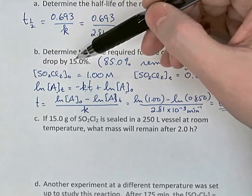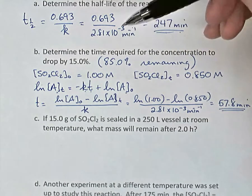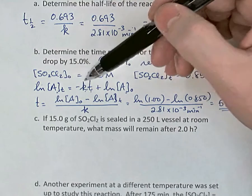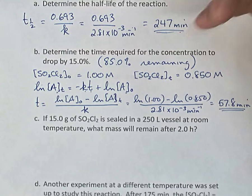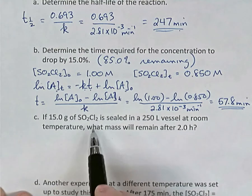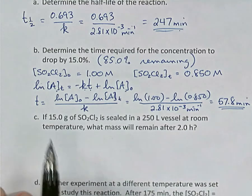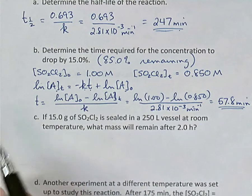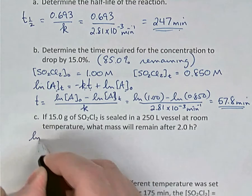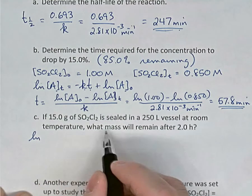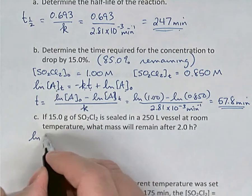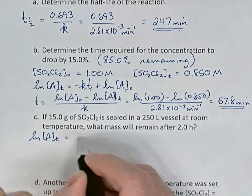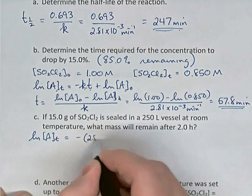Although the equation says natural log of concentration, we can use natural log of anything proportional to concentration — for example, moles are proportional to molarity, and mass is also proportional because twice the mass gives twice the moles and twice the concentration. So we can use masses directly in the first-order integrated rate law. This only works for first-order kinetics because of the natural log; for zero or second order you'd have to convert to molarity.